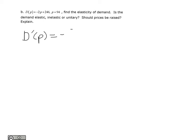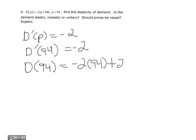So that's just going to be negative 2. And no matter what you plug into that function, so in this case it's 94, we're going to get negative 2. d of 94 is equal to negative 2 times 94 plus 246. And we get 58 for that.